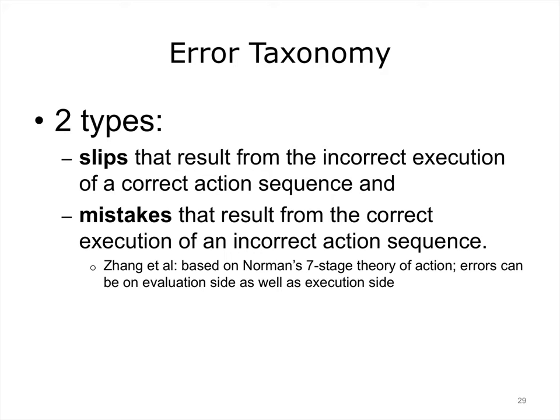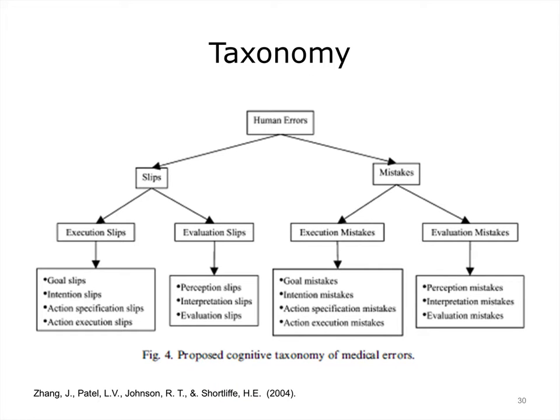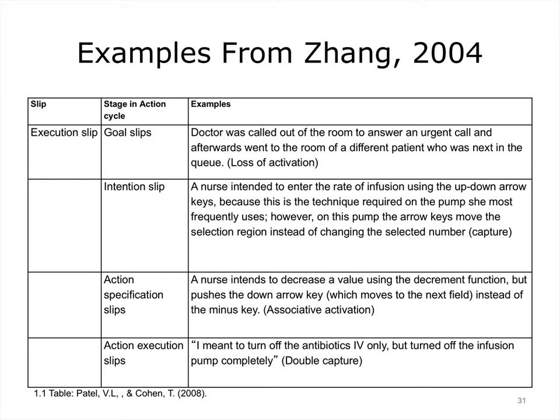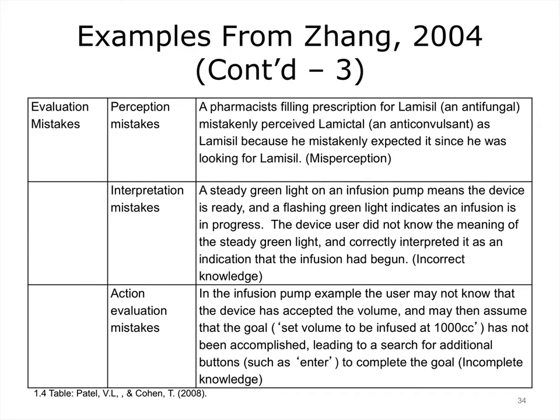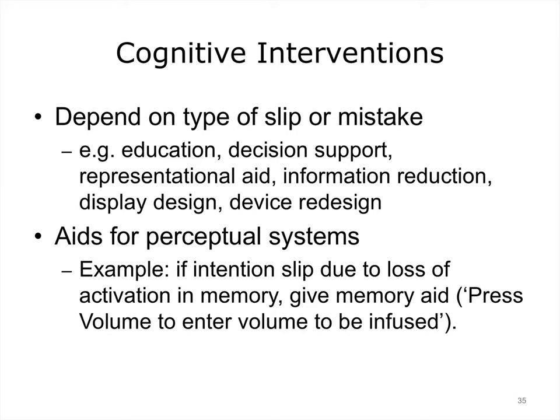Slips and mistakes can be further categorized according to whether they pertain to goals, intentions, action specifications, or action executions, as well as whether they involve perception, interpretation, or evaluation. The following slides give the complete taxonomy developed by Zhang et al., as well as healthcare examples of each type of error. Interventions for preventing errors depend on the type of slip or mistake. They can include education, decision support, representational aids, information reduction — i.e., simplifying the system — display design, and device redesign. Aides for perceptual systems are also important.